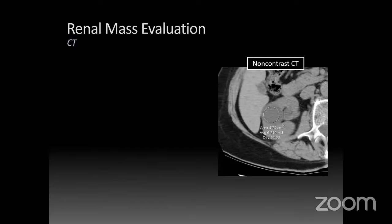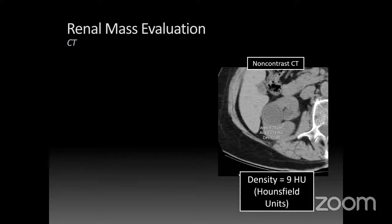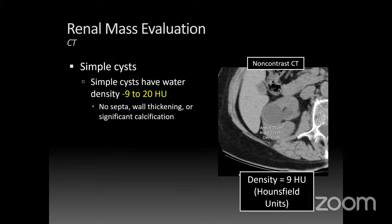CT is a more robust way to evaluate renal masses. Starting with a non-contrast CT — here's a simple cyst with a density of 9 Hounsfield units, the unit used to evaluate attenuation on CT. Simple cysts will have a water density. According to the ACR guidelines for renal mass evaluation, that density would be negative 9 to 20. As long as it doesn't have septations, wall thickening, or significant calcification, you can call it a simple cyst.